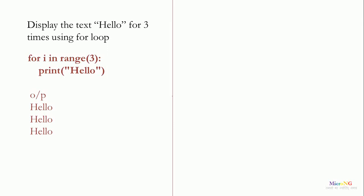As an example to display the word hello three times using the for loop, we write: for i in range(3): print('hello'). How many times the print statement executes depends on the possible values of the looping variable i. Since we used range(3), it generates 0, 1, and 2, so i takes the value 0 the first time, 1 the second time, and 2 the third time. Total executions are 3, so hello is printed 3 times.